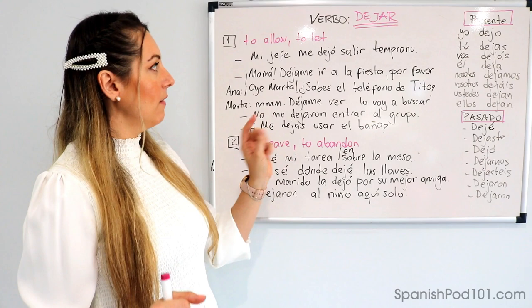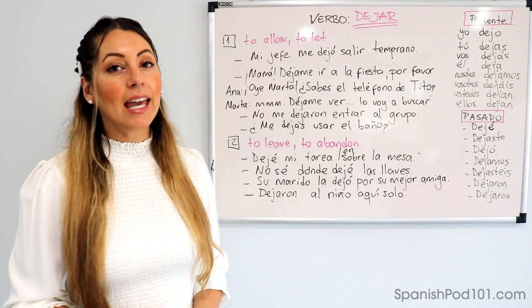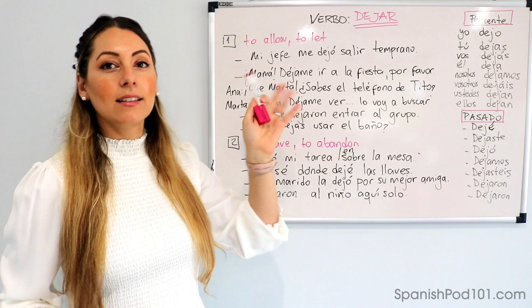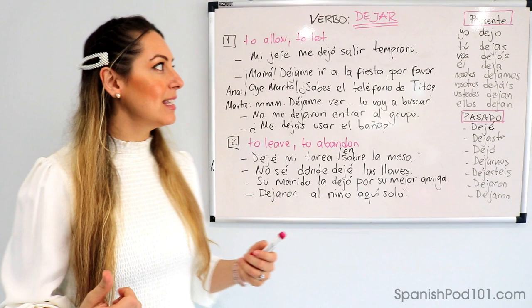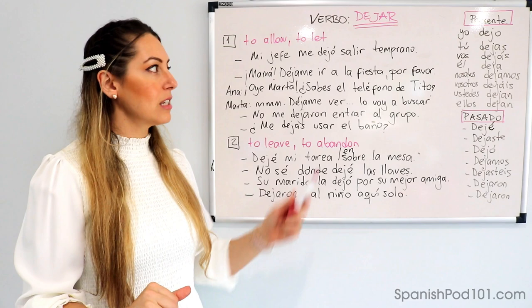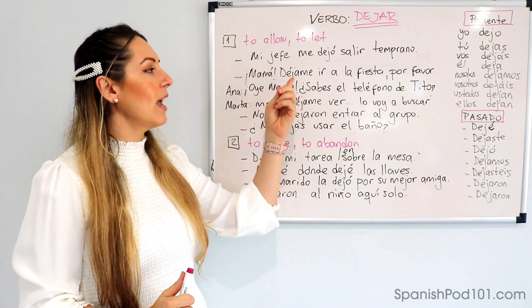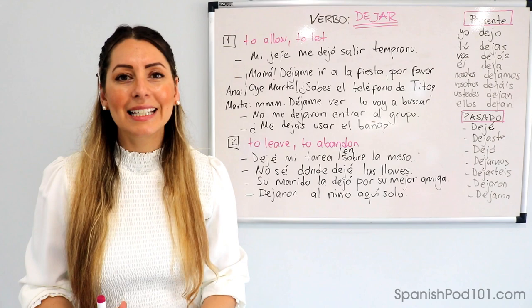El primer significado es 'to allow or to let' — la idea de permitir algo, dar permiso para que algo suceda. To stop providing resistance and allow something to happen. Vamos a ver algunos ejemplos. Mi jefe me dejó salir temprano — my boss let me leave early, or allowed me to leave early. Puedes ver aquí: me dejó salir — he allowed me to leave. Mamá, déjame ir a la fiesta, por favor — allow me or let me go to the party, please.